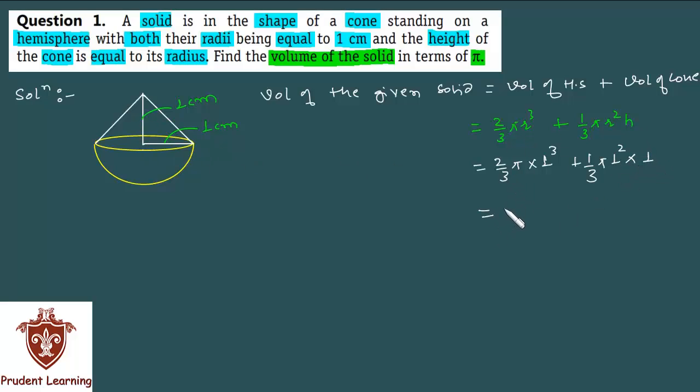Which on further simplification gives us 2/3 π, 1 cubed is 1, plus 1/3 π times 1 squared is 1, and 1 times 1 is 1. Taking LCM of 3, we get 2π + π, which gives us 3π/3. 3 cancels with 3, finally the given solid volume is π cm³.